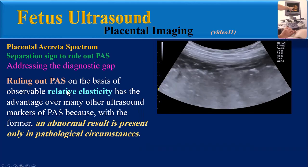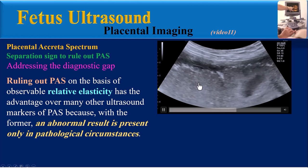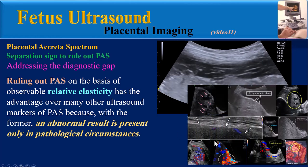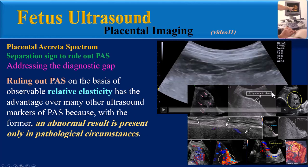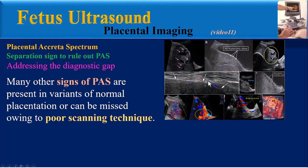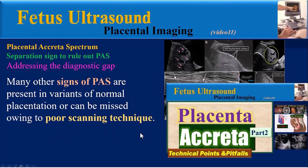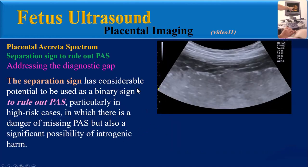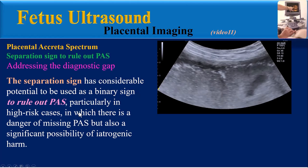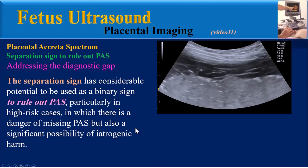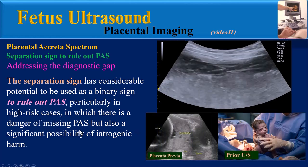Ruling out PAS on the basis of observable relative elasticity has an advantage over many other ultrasound markers of PAS, because an abnormal result is present only in pathological circumstances. Many other signs of PAS are present in variations of normal placentation or can be missed owing to poor scanning technique, as explained in video Part 2. The separation sign has considerable potential to be used as a binary sign to rule out PAS, particularly in high-risk cases where there is a danger of missing PAS but also a significant possibility of iatrogenic harm.